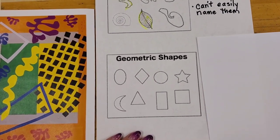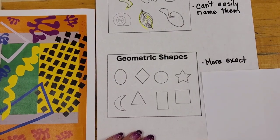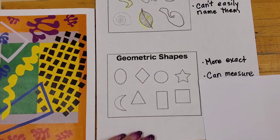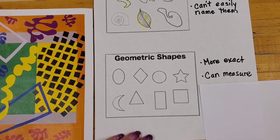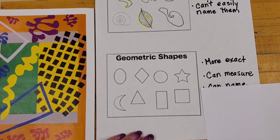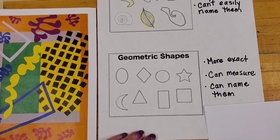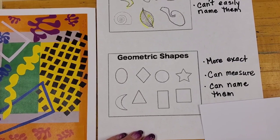Conversely we have geometric shapes. These shapes are more exact. These are shapes that we can measure and these are shapes that we can easily name.